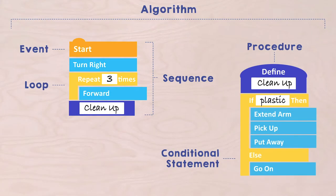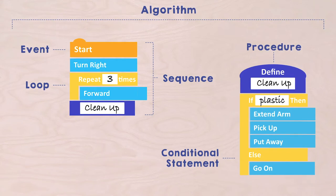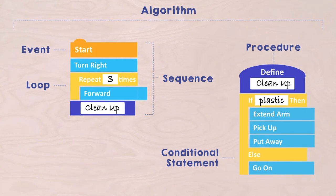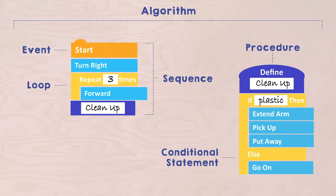Now you know that an algorithm is a step-by-step plan to solve a problem. Such an algorithm starts with an event. A series of steps within such an algorithm is called a sequence. A sequence can contain loops — pieces that are repeated a number of times — and conditional statements.